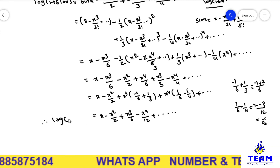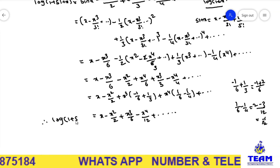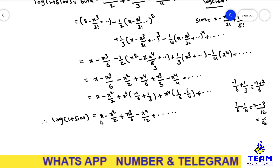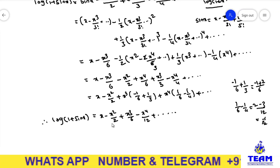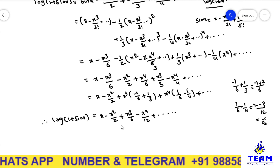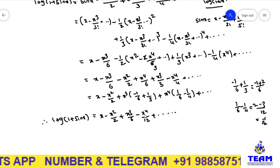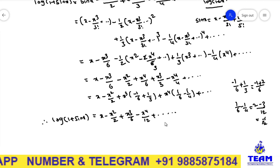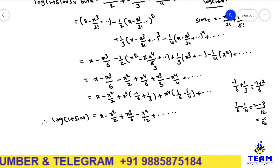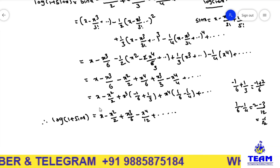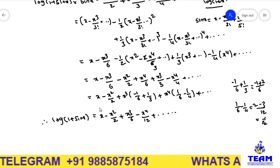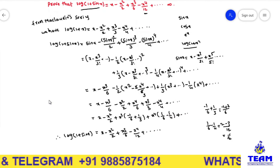So the required expansion is: log of 1 plus sin x is equal to x minus x squared by 2 plus x cubed by 6 minus x to the power of 4 by 12 plus so on. Thank you for watching this video.